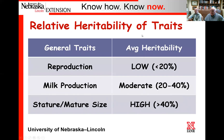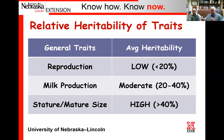We want you to understand the difference in relative heritability of traits. Not all traits have the same amount of heritability. For instance, reproduction in the dairy cow is a low heritability trait, while stature and mature size are very highly heritable. If you're trying to make a genetic gain, you can make genetic gain faster on a trait that is more heritable. Heritability is, between two different animals, the differences that are actually due to genetics — it takes the environment and management out of it.